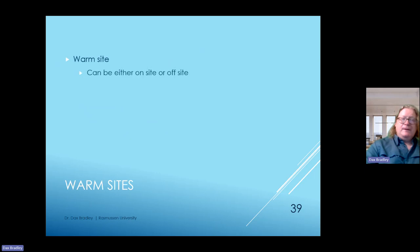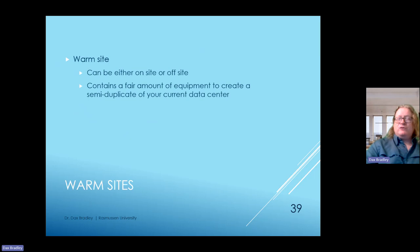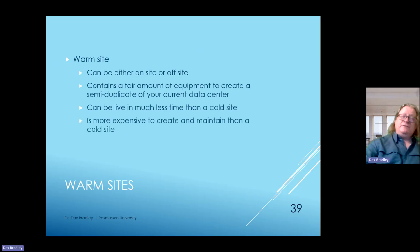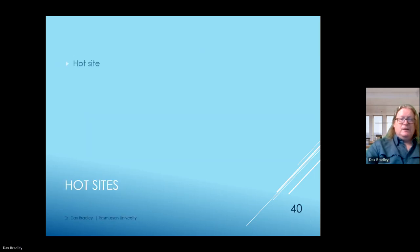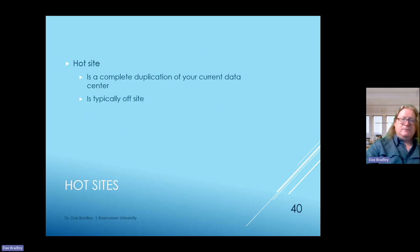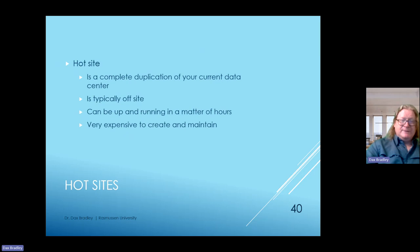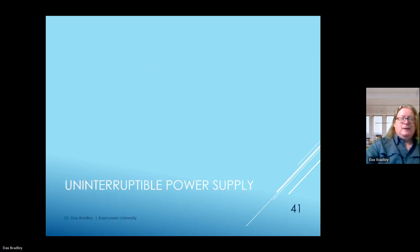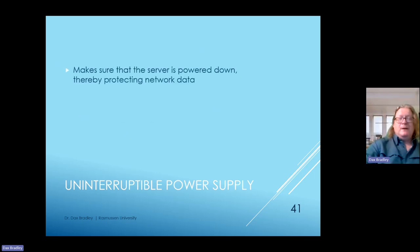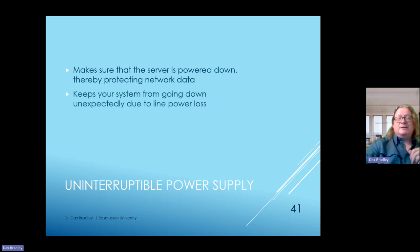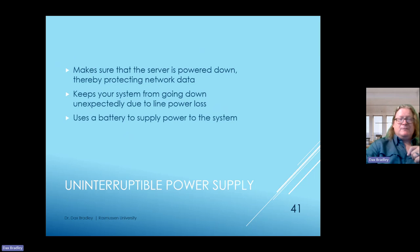A warm site can be on-site or off-site, contains a fair amount of equipment to create a semi-duplicate of your current data center, and can go live in much less time than a cold site—though more expensive to create and maintain. A hot site is a complete duplication of your data center, typically off-site, and can be up and running in hours instead of days or weeks—though very expensive. The UPS ensures a server is powered down safely, protects network data, and uses a battery to supply power to the system.